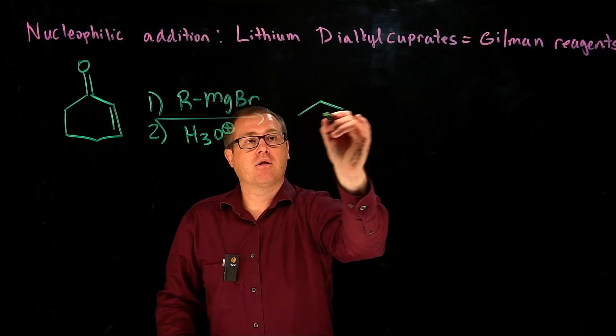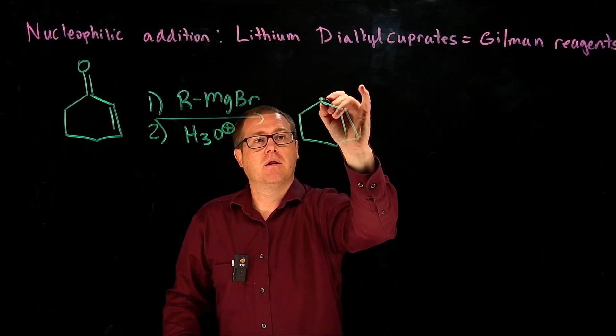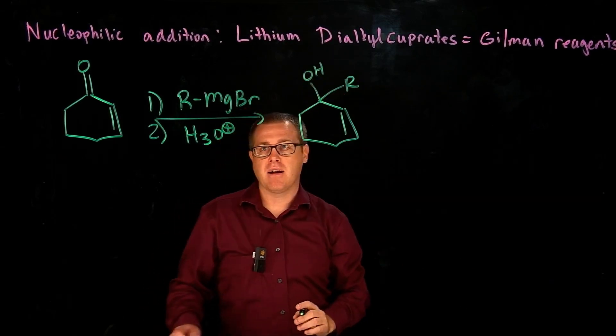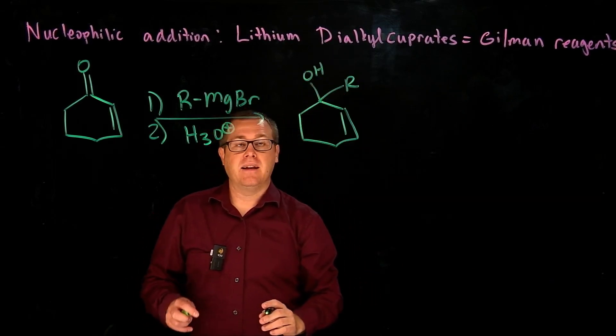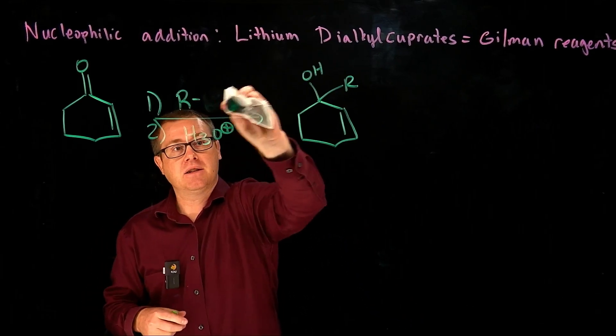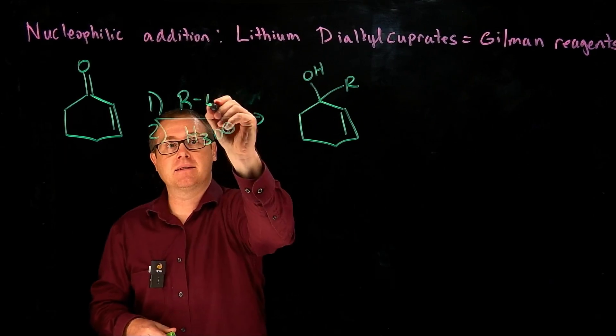That will follow the kinetic pathway, which is the direct product. So we will add that R group in a direct fashion to generate our alcohol. And if we change this reagent to an alkyl lithium reagent, we would get the same exact product.